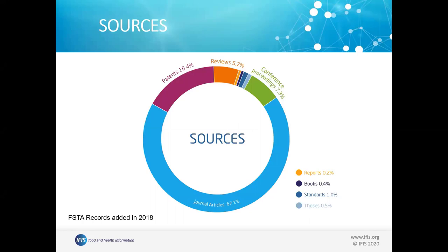So what is indexed in FSTA? Like almost any other database, it's mostly journal articles, because research outputs are mostly reported there. But we also have quite a few patents, reviews, and conference proceedings. We include patents because they offer a view into research being done in industry, where people don't share all their secrets — but when they have results, they patent them, giving you a window into that research.